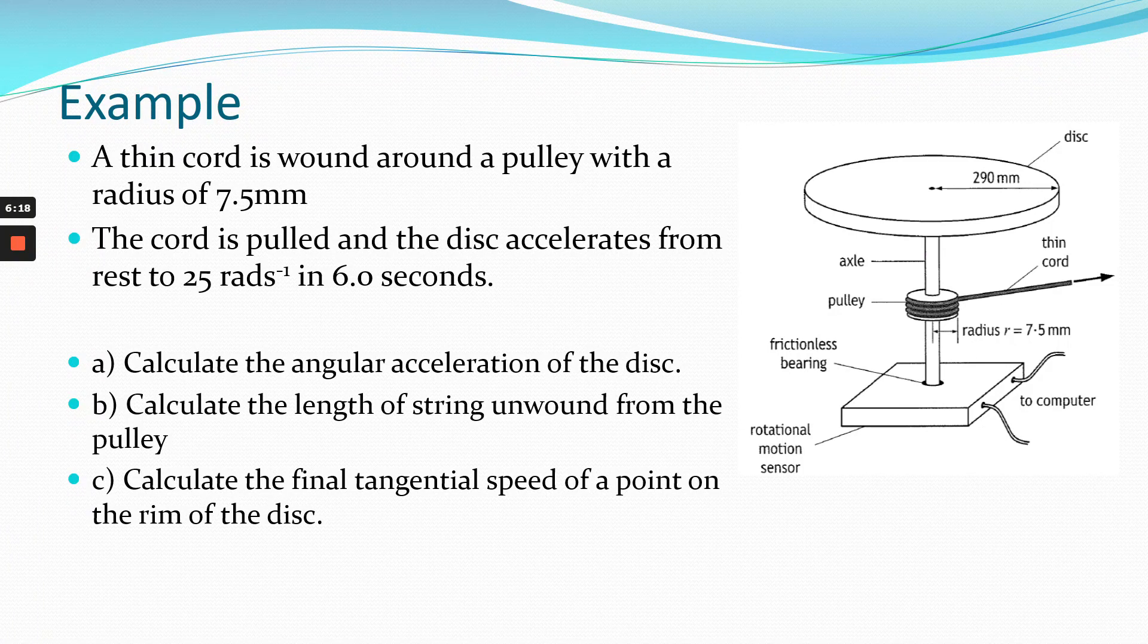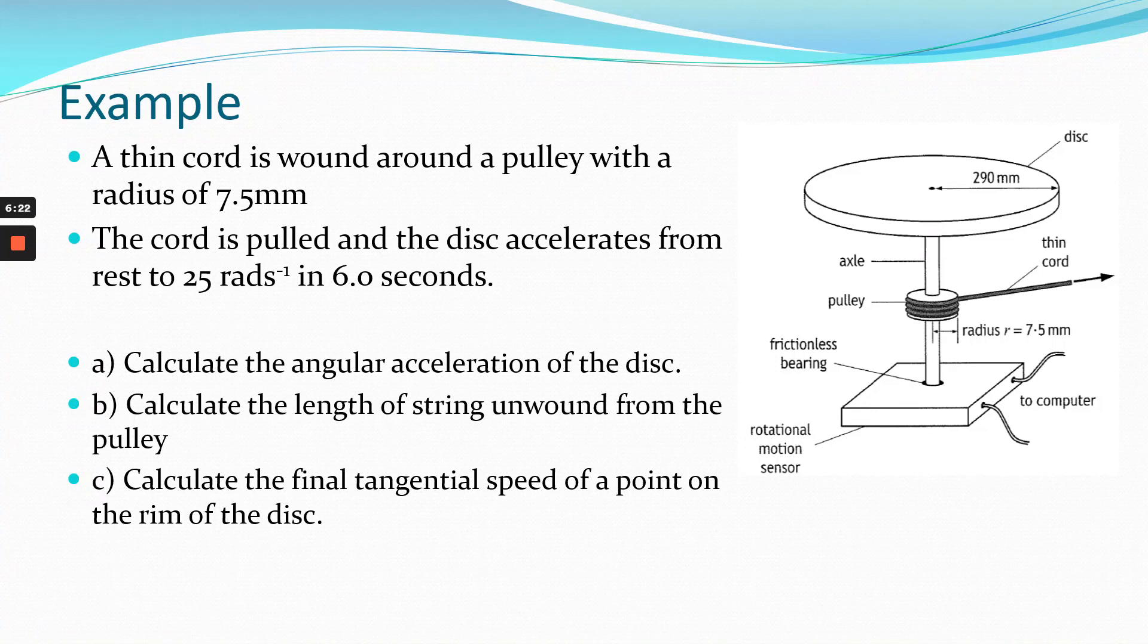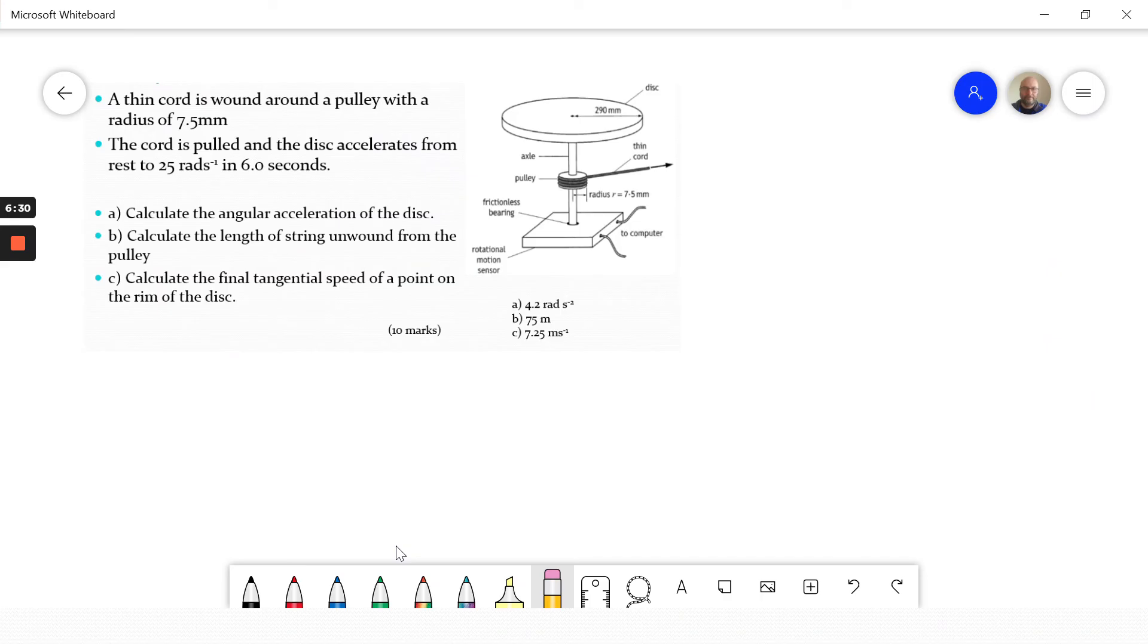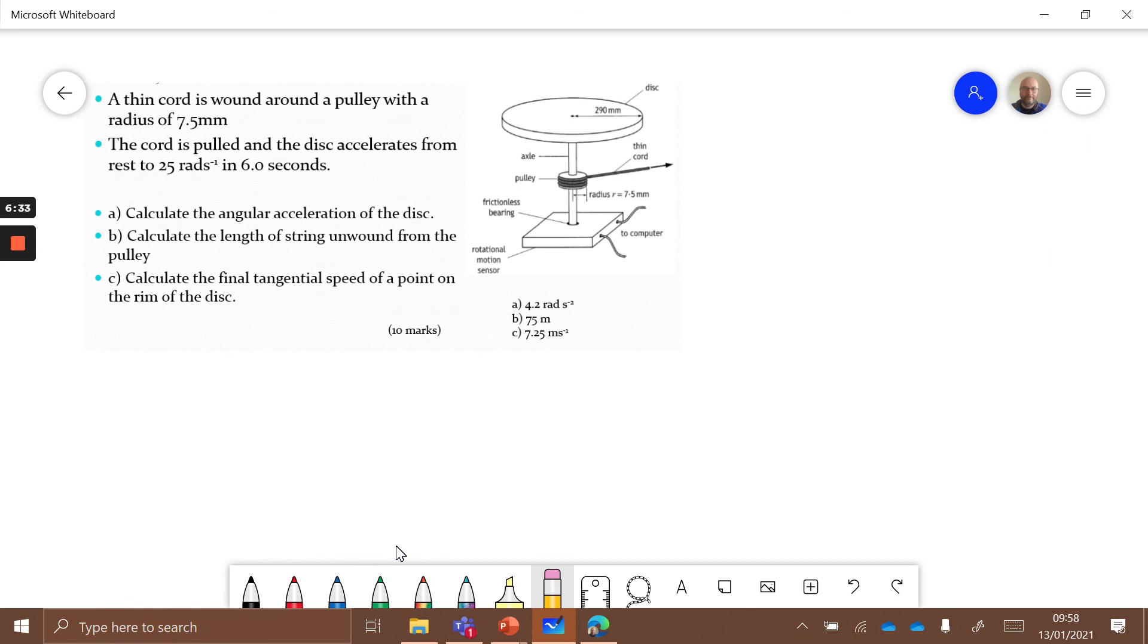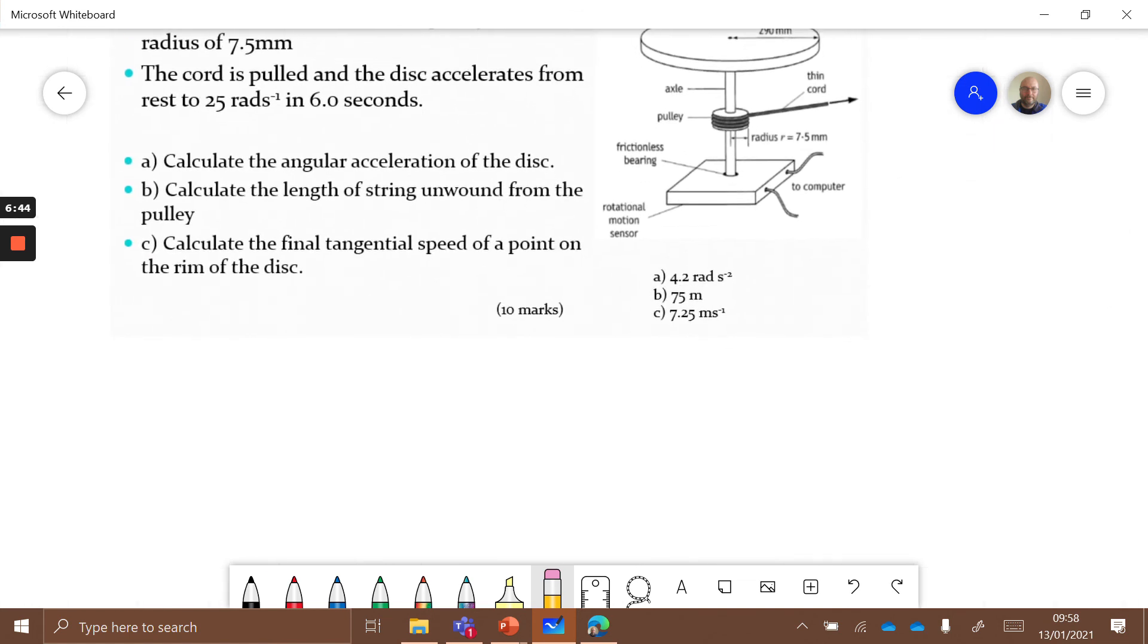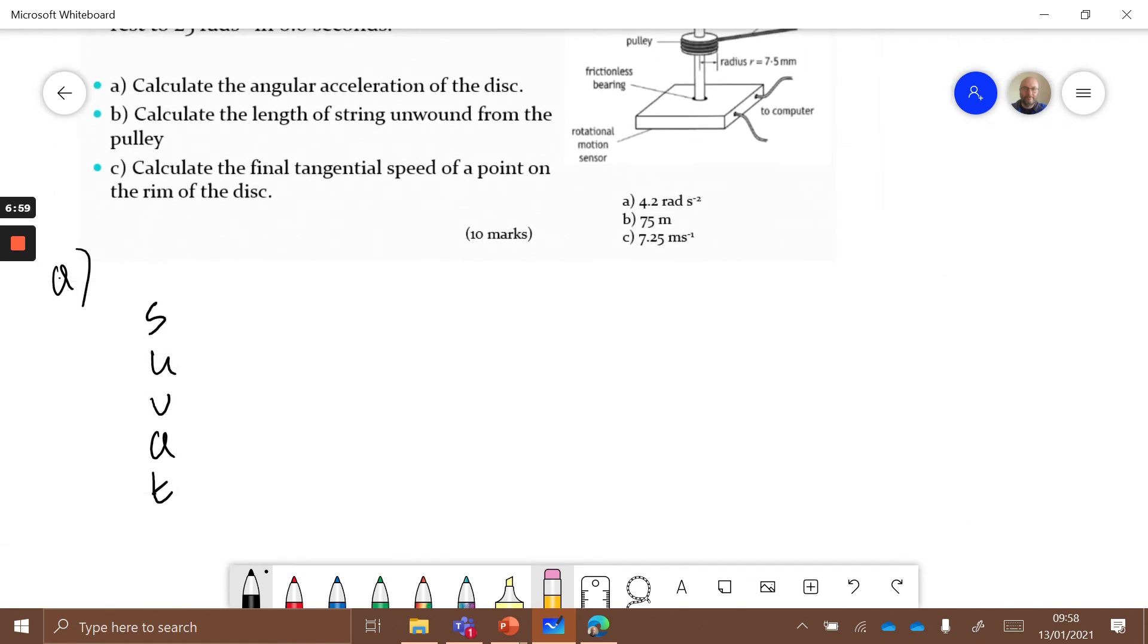Our questions are fairly simple - we've got a fair amount of data there. As the cord is pulled, it accelerates from rest to 25 radians per second in six seconds. Calculate the angular acceleration. What I'm going to do is I'm going to actually write it at the same time, because I found in the last video that I couldn't really identify the bits on the video I was talking about at the time. Part A: calculate the angular acceleration.